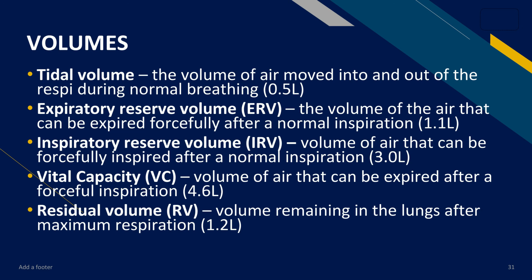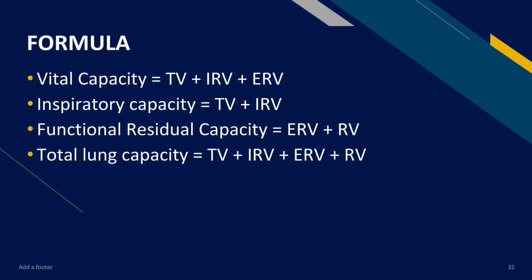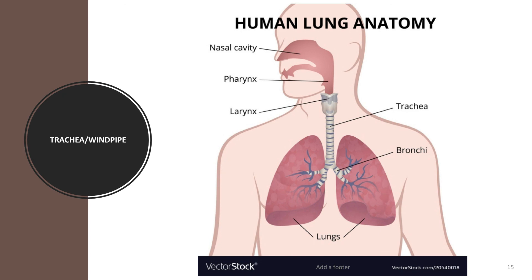The inspiratory reserve volume, or IRV, is the additional amount of air that can be inhaled after a normal inhalation. The vital capacity, or VC, is the volume of air that can be exhaled after a forceful inspiration, with a normal value of 4.6 liters. The residual volume, or RV, is the volume remaining in the lungs after maximum respiration, with a normal value of 1.2 liters. The key abbreviations are: TV for tidal volume, IRV for inspiratory reserve volume, ERV for expiratory reserve volume, and RV for residual volume.